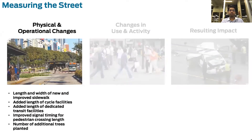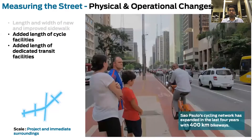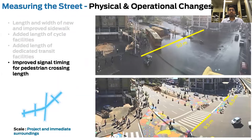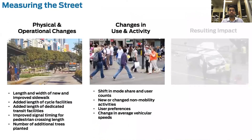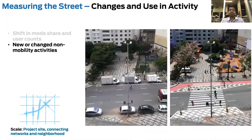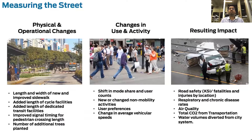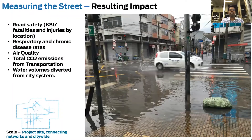The Global Street Design Guide talks about some of these metrics. It talks about the physical and operational changes we can measure, such as the length and width of new improved sidewalks, the added length of cycle facilities or dedicated transit facilities, improved signal timing, or the length of the pedestrian crossing, which reduces the risk of exposure. We should also measure changes in use and activity, such as the shift in mode share, how many people took to cycling after a cycle lane was built, whether it changed user preferences or reduced vehicular speeds. And of course, we have to measure the long-term resulting impact, such as KSI, air quality, and carbon emissions along those corridors or neighborhoods being transformed.